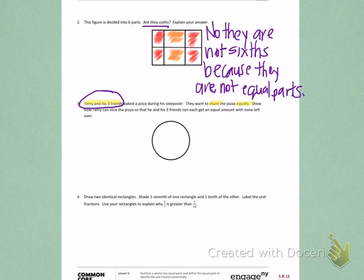Number 4. Draw two identical rectangles. Shade 1/7th of one rectangle and 1/10th of the other. Label the unit fractions. Use your rectangles to explain why 1/7th is greater than 1/10th.